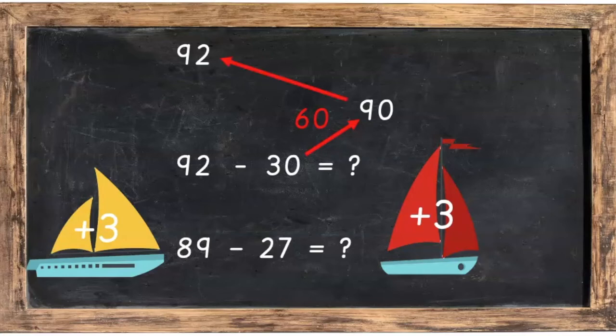And then from 90 up to 92, well that's a jump of 2. So the total difference between 92 and 30 is 60 plus 2 which is 62.